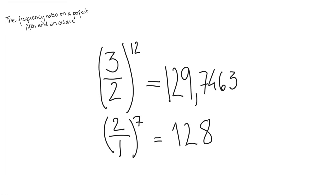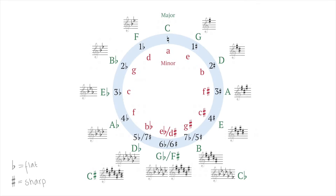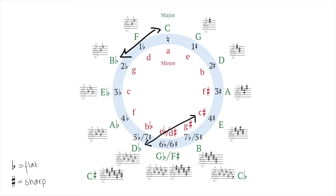This small delta here, this small difference between 129.7463 and 128 is Pythagoras comma. So as you see in this calculation, 7 octaves is not the same as 12 fifths. And Pythagoras comma could even be defined as a small difference between two unharmonically equivalent notes, like C and B sharp or D flat and C sharp.